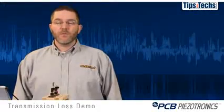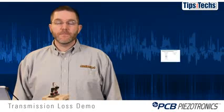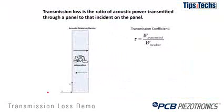We'll start with a little bit of theory. The transmission coefficient for a material is defined as the amount of sound power transmitted through that material divided by the amount of sound power incident on the material.